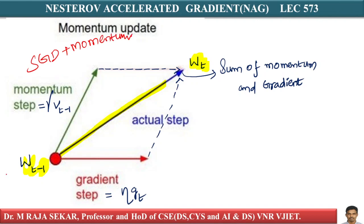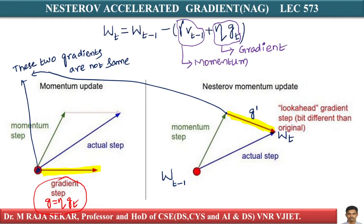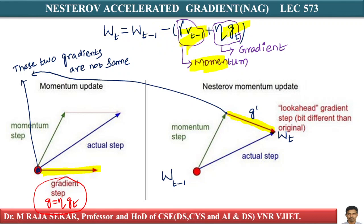Now let's see what happens in NAG — Nestrov Accelerated Gradient. In NAG it is slightly different. The update equation is: w_t = w_{t-1} − (γ × v_{t-1} + η × g_t), where γ × v_{t-1} is the momentum term and η × g_t is the gradient term. We are moving the sum of these two terms — momentum term plus gradient term.